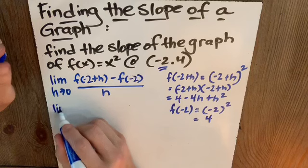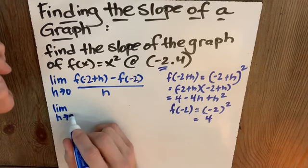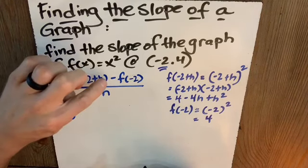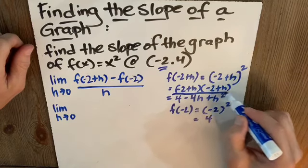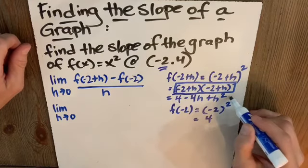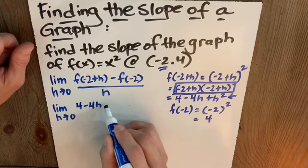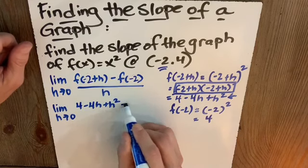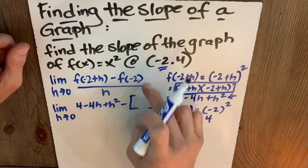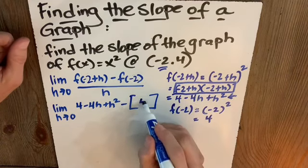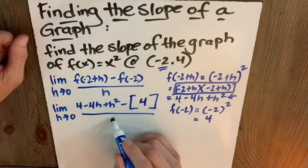So this simplifies to, well, what is f of negative 2 plus h? I just found it over here. It's right here. It's 4 minus 4h plus h squared minus, well, what was f of negative 2? I'm just plugging and chugging. That was 4 over h.